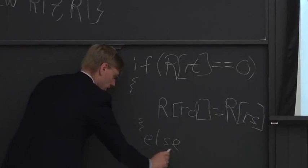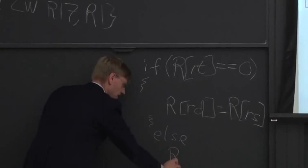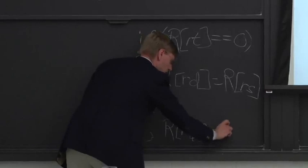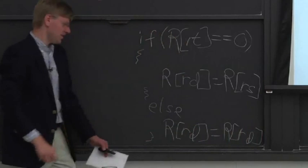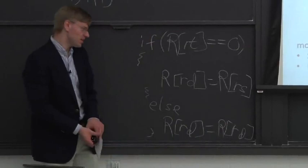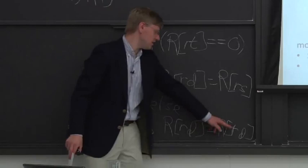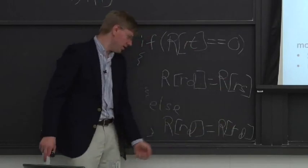The else case is going to say register RD gets register RD. And you might say, well, RD already had RD. That's true, but our bypassing or our forwarding logic didn't have that. So we need to actually read this RD. So that means we need to read one, two, three. And we need to write one location.